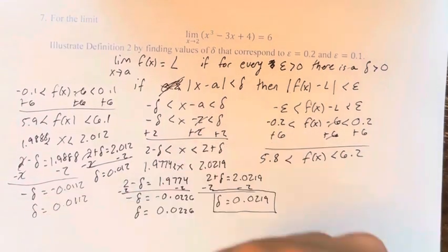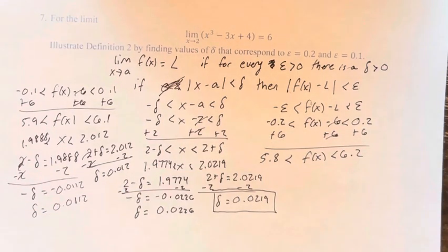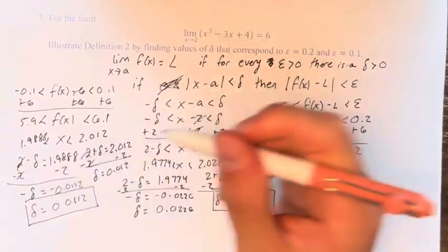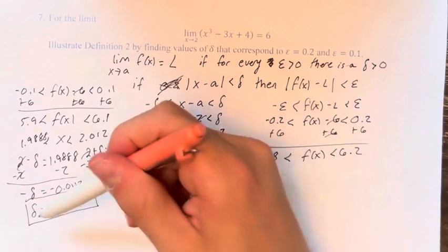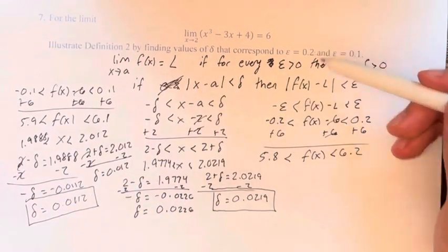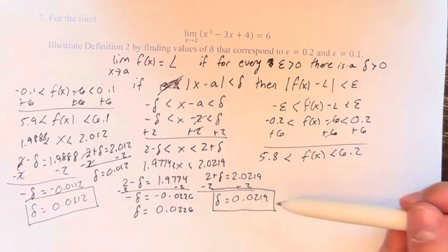And for the same reasons, we have to pick the more restrictive, the smaller of these two values. Therefore lambda for epsilon equal to 0.1 is 0.0112. And again, if epsilon is 0.2, lambda is 0.0219.